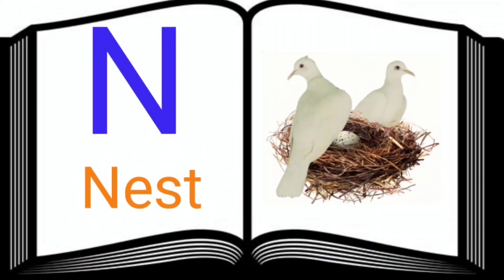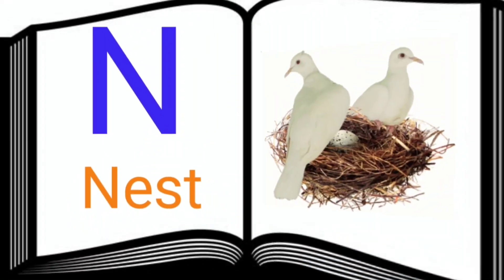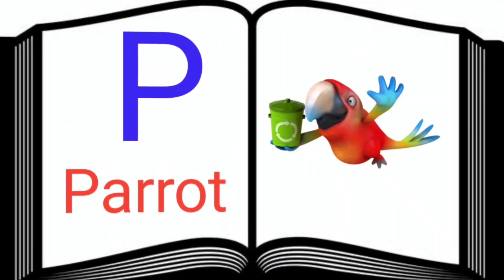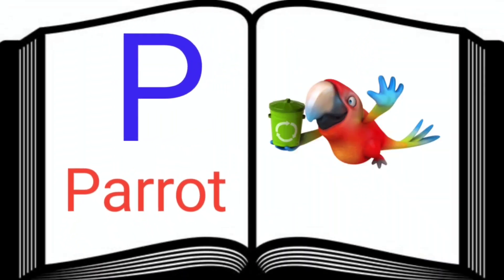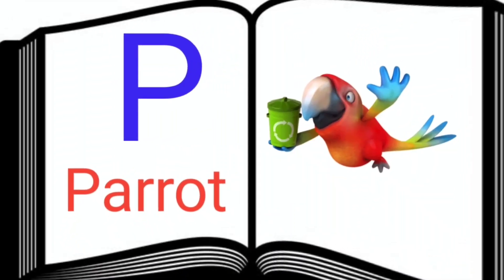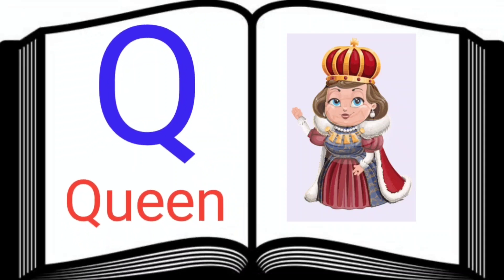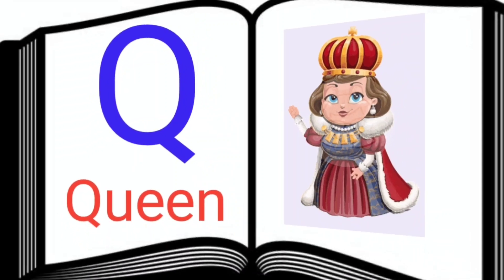N. N for nest. O. O for orange. P. P for parrot. Q. Q for queen.